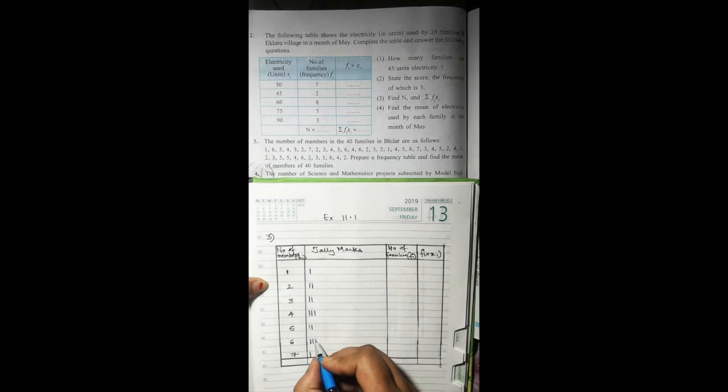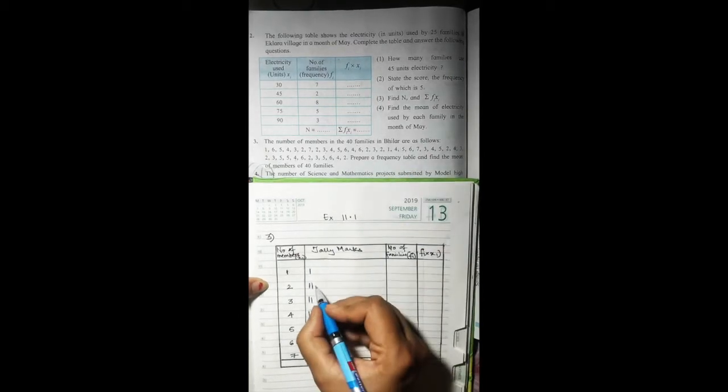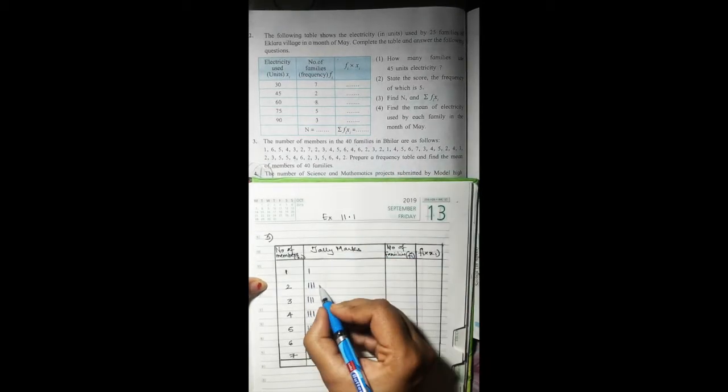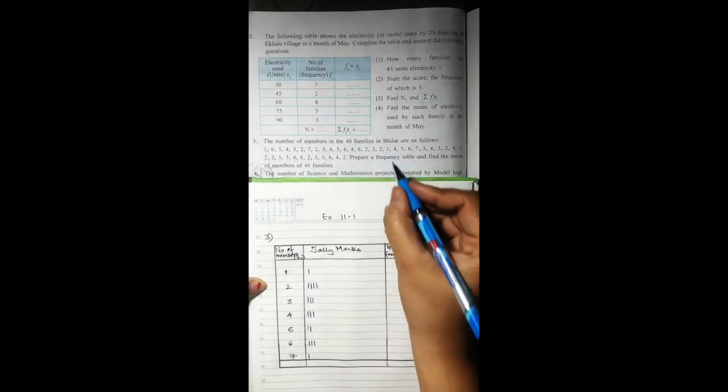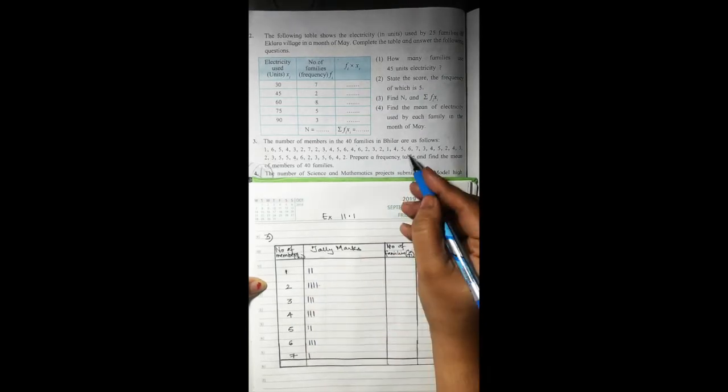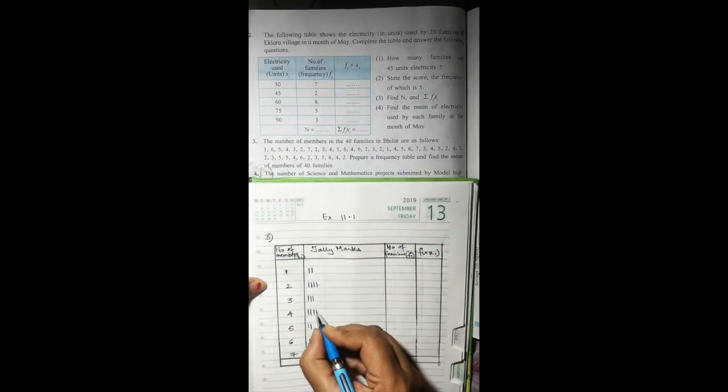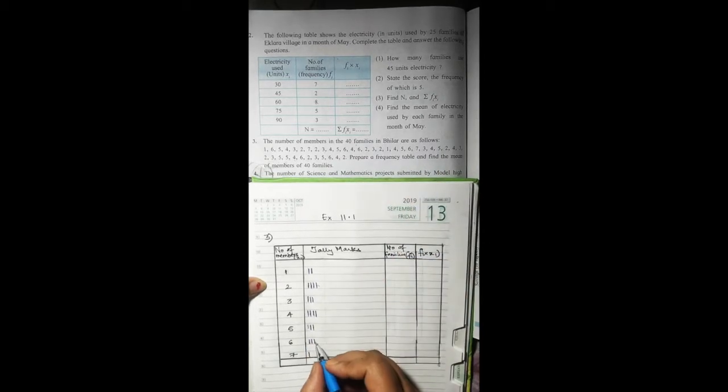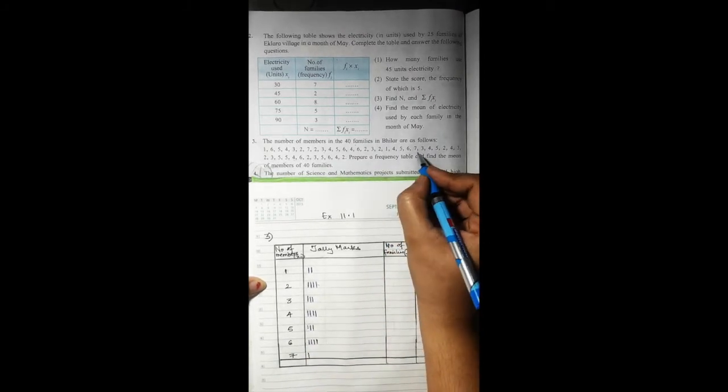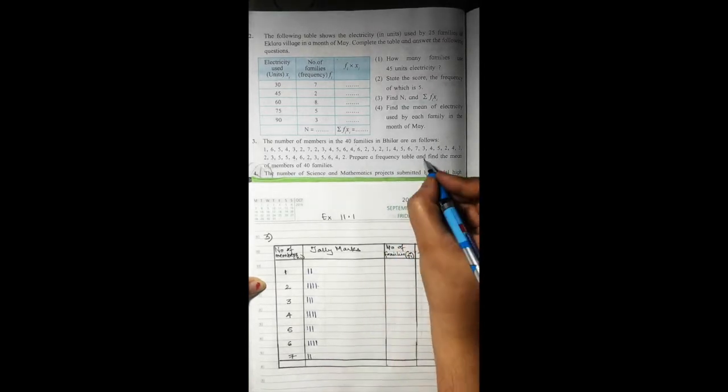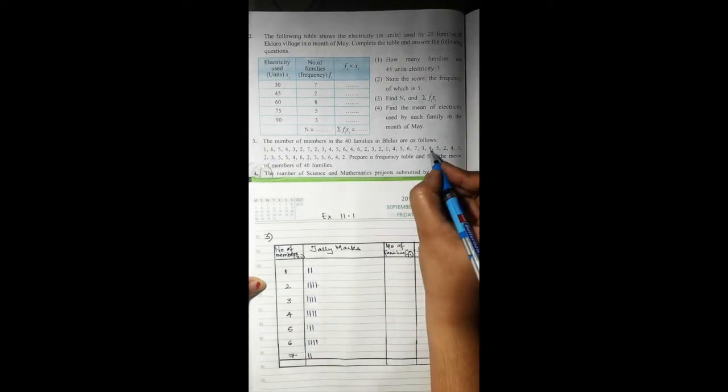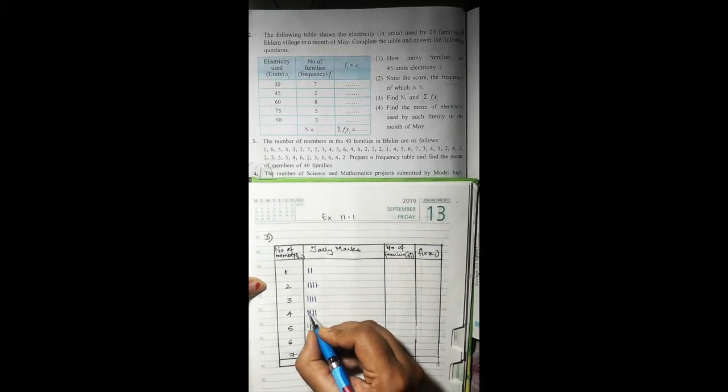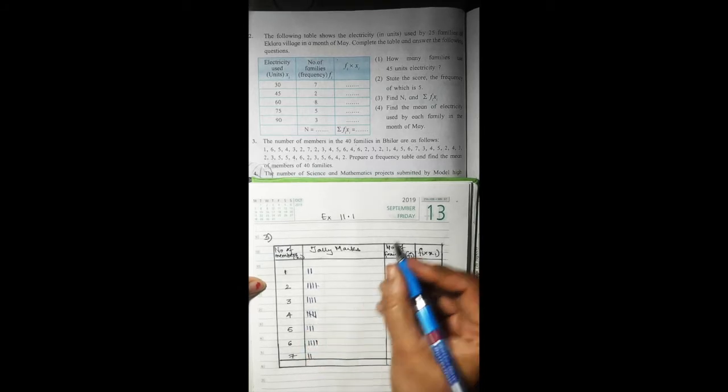Six, six, seven, three, four, four. Now this is the fifth line so we'll draw a slant line. Five.